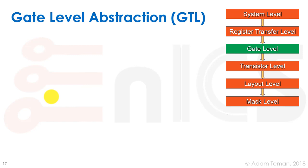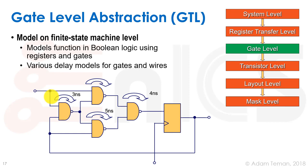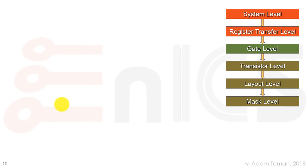RTL is still a behavioral description, so in the end we need to make logic gates we can physically implement. The gate-level abstraction involves taking a finite state machine and turning it into logic gates — NAND gates and flip-flops — to carry out whatever was written at RTL using Boolean logic. At this level we also know gate characteristics such as actual delay — for example, 3 ns or 5 ns — and can model power and wire delays at the gate level.